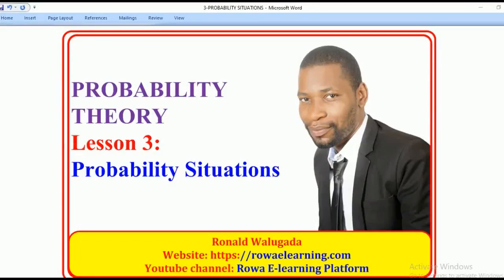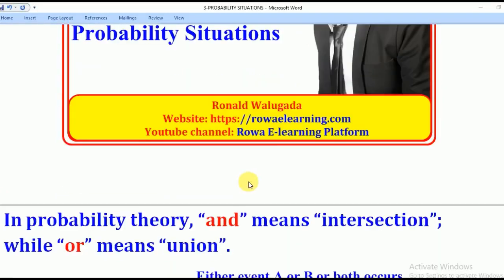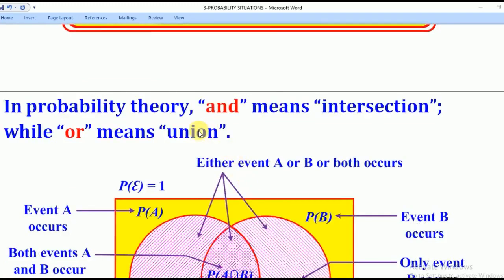Hello viewers, this is Walgadar Ronald taking you through today's tutorial on Probability Theory. Today's lesson will be on Probability Situations. In Probability Situations, there are two keywords we ought to be familiar with: one of them is AND and the other one is OR. When we use set theory to understand these Probability Situations, you have to remember that AND means intersection.